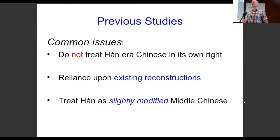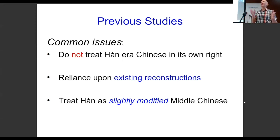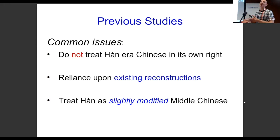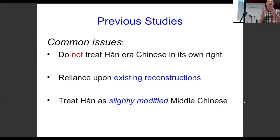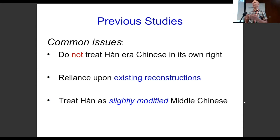A common issue with all these studies is that they don't take the Han data set in its own right — they interpret it in terms of somebody's Old Chinese reconstruction. The problem is you're bringing in all the assumptions of Old Chinese reconstructions, and you're not able to disprove things about Old Chinese or Middle Chinese. There's also the question of whether Han Dynasty Chinese is a direct descendant of Old Chinese, given multiple dialects. They also tend to treat Han as slightly modified Middle Chinese, which is a huge assumption given the time distance.